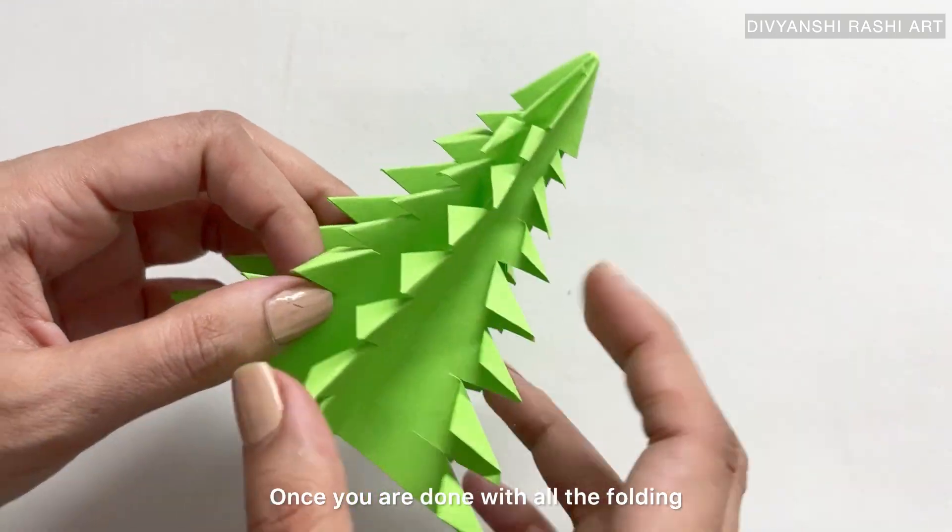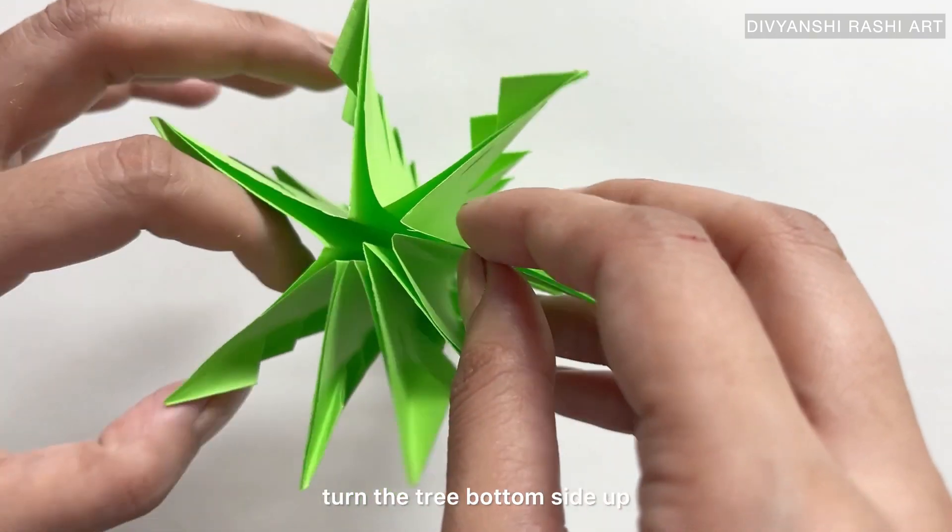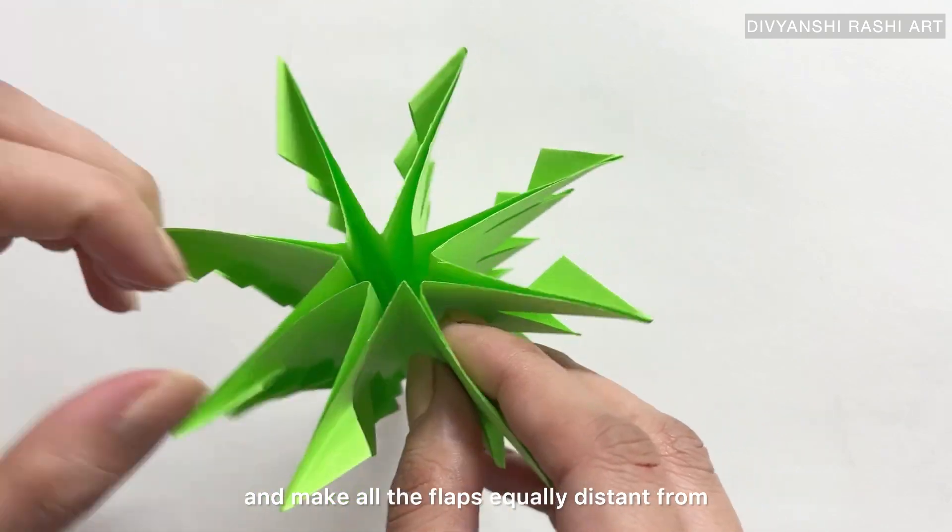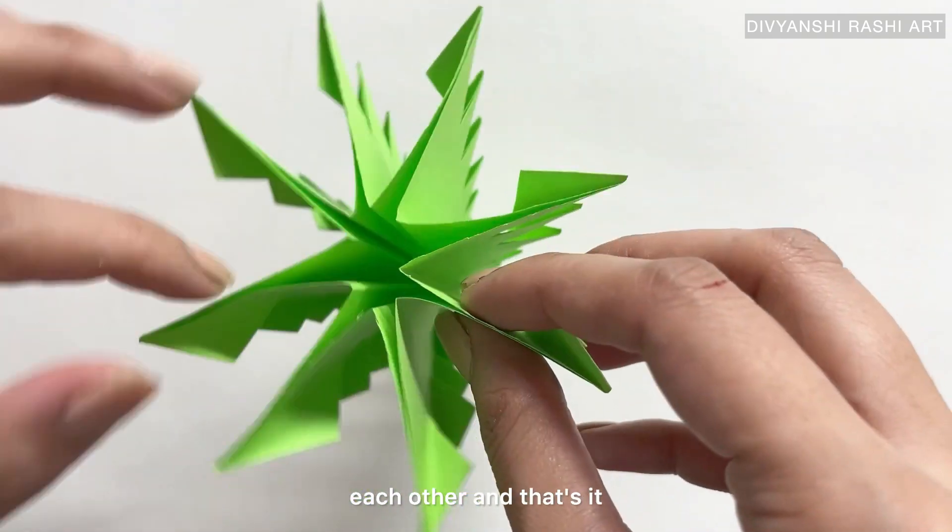Once you are done with all the folding, turn the tree bottom side up and make all the flaps equally distant from each other. And that's it—our paper Christmas tree is ready! You can use this as desk decor or however you like.